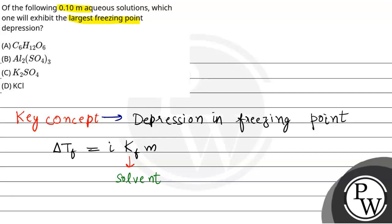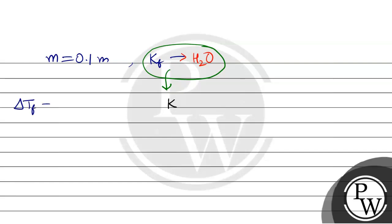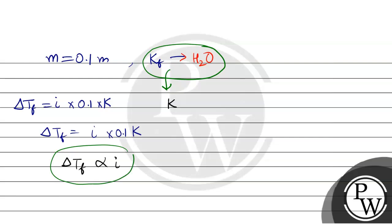Since all solutions are aqueous (0.1 molar), the Kf value used will be that of water, and it will be the same for all options. So delta Tf equals i times 0.1 times Kf. Here, 0.1 and Kf are both constant, so delta Tf is directly proportional to i. Whichever option has the largest van't Hoff factor will have the largest depression in freezing point.